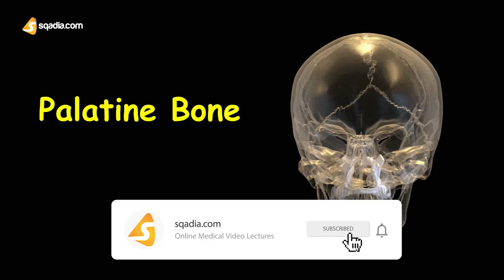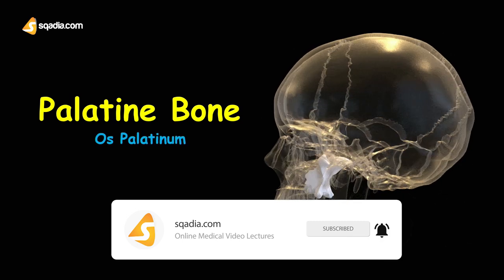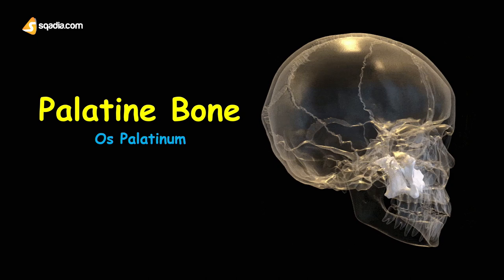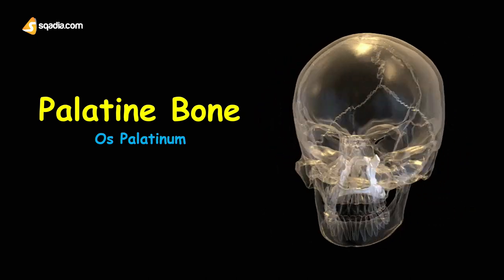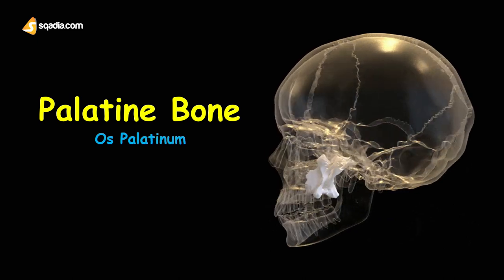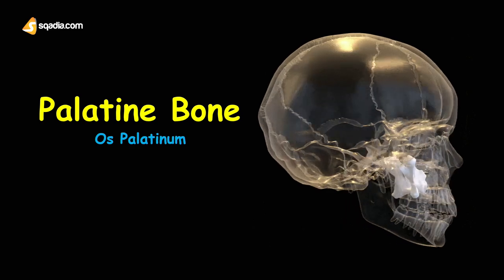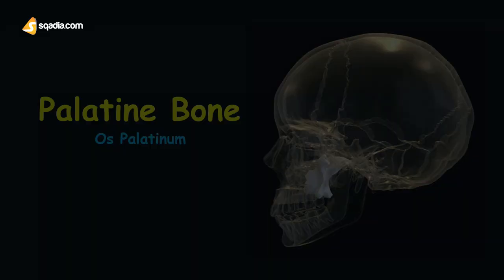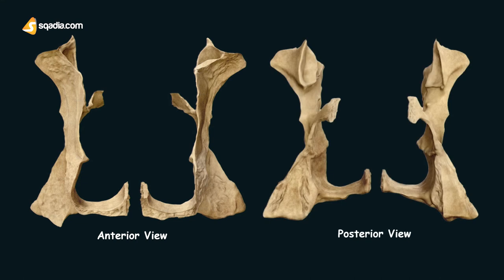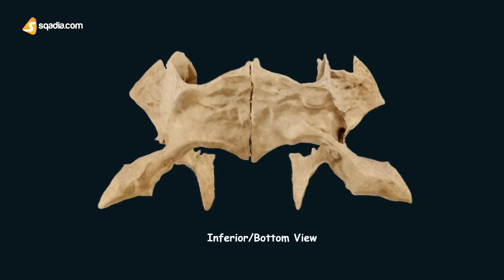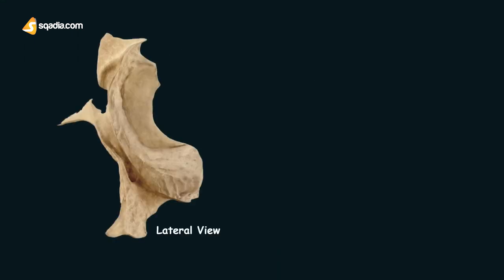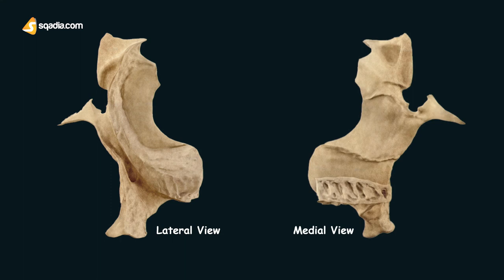The palatine bone, or in Latin os palatinum, is a paired, flat, irregular facial bone. Before proceeding ahead let's have a review of all the views of the palatine bone. Anterior and posterior are placed side by side for better understanding. Then we have a bottom or inferior view and lastly the lateral and the medial view. Medial means towards the body and lateral means away from the body.